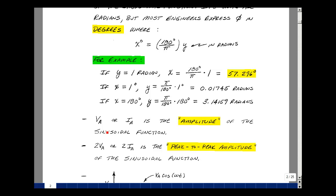The term that multiplied our cosine function, v sub a or i sub a, is referred to as the amplitude of the sinusoidal function. Now going from peak to peak on that cosine wave, we have twice the value of v sub a, or twice the value of i sub a. We refer to that as the peak to peak amplitude.